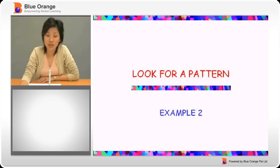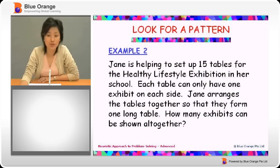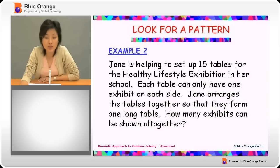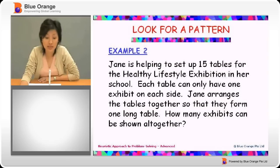Let's now take a look at Example 2. Jane is helping to set up 15 tables for the Healthy Lifestyle exhibition in her school. Each table can only have one exhibit on each side. Jane arranges the tables together so that they form one long table. How many exhibits can be shown altogether?